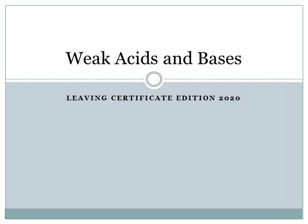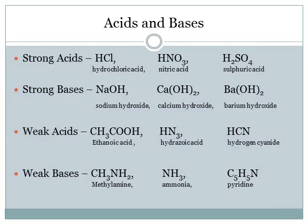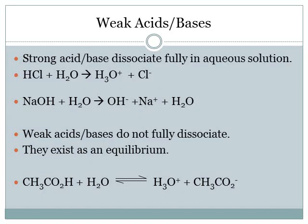Welcome back to the next section of our acid-base series. Today we're going to look at weak acids. A question often asked by students is: how do I recognize strong acids and bases versus weak acids and bases? Strong acids and bases are names you would typically be familiar with, like hydrochloric acid, sulfuric acid, sodium hydroxide, and calcium hydroxide. Weak acids and bases tend to be less familiar — for example, ethanoic acid involves lots of carbons and hydrogens, and weak bases like methylamine look quite organic with a lot of nitrogens.